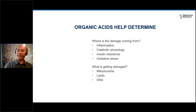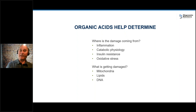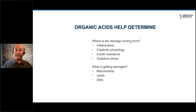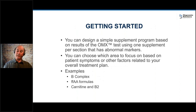Is it neuroinflammation? Is it gut inflammation? In terms of catabolic physiology, are they in a breakdown state because of stress and the stress markers — like the catecholamines going off? Or are they in a breakdown state because of toxins, with elevated toxic markers? Is there insulin resistance? There's a whole series of markers for early detection of insulin-related problems. And of course there are a dozen or more markers directly relevant to oxidative stress. We also want to know what's getting damaged — are your mitochondria getting damaged, your lipids, your DNA?